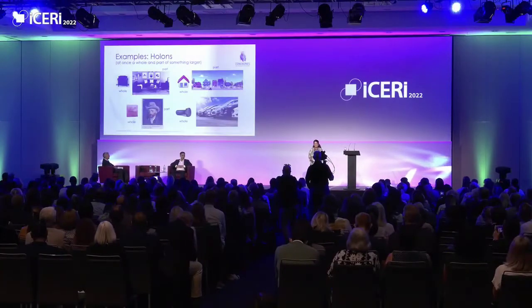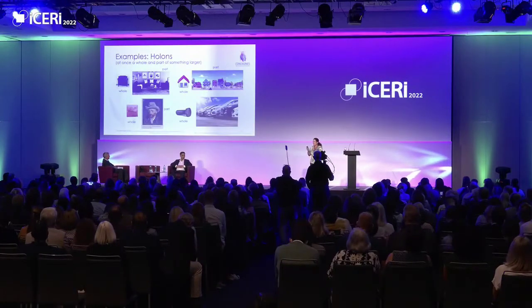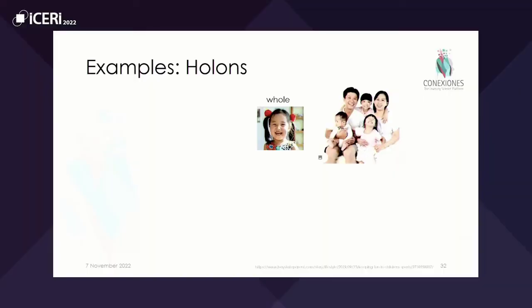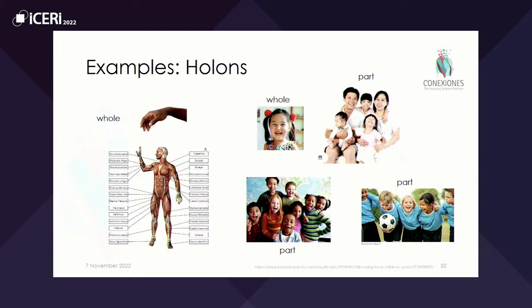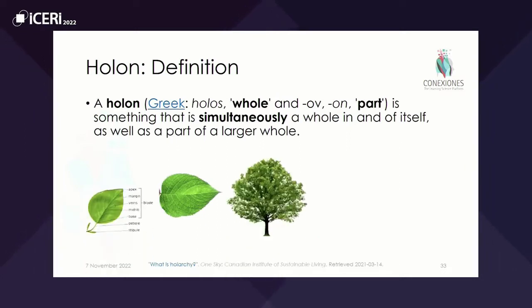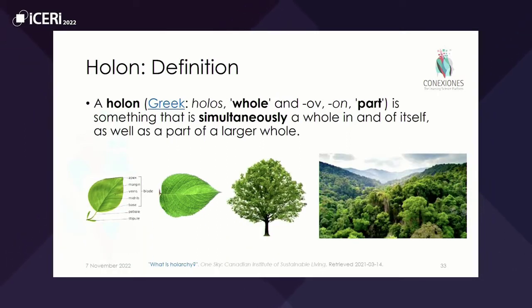A holon is something that is at once a part and a whole. Is anybody seeing an aha moment right now, like this lady who's got a light bulb going on on top of her head? Everything is a whole. This little girl is herself — she's a thing — but she's also part of a family, part of a school, and part of a soccer team. And your hand is part of your body, but it's also a whole by itself.